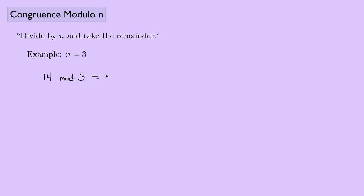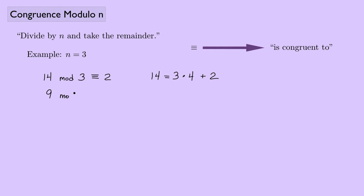In this case we're looking at dividing 14 by 3 and looking at the remainder. We end up getting a remainder of 2 because 14 equals 3 times 4 plus 2. We write that symbol as 'is congruent to,' so I could say 14 mod 3 is congruent to 2. Another example: suppose we wanted to look at 9 mod 3. We see that 3 goes into 9 evenly, so there's a remainder of 0.